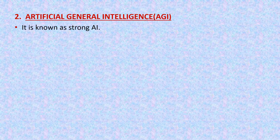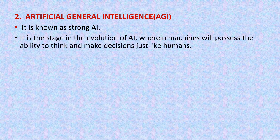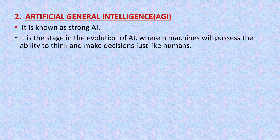The next type of artificial intelligence is artificial general intelligence, or AGI. It is known as strong AI. It is a stage in the evolution of AI wherein machines will possess the ability to think and make decisions just like humans. With artificial general intelligence we will be able to make machines with the ability to think, analyze, understand and make decisions just like human beings without any programming or algorithm. At this stage machines will themselves act as humans, that's why it is known as strong AI.